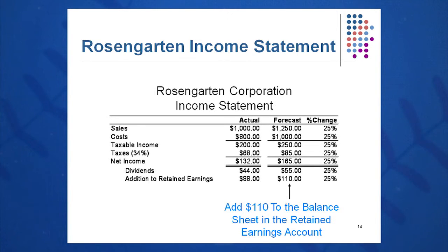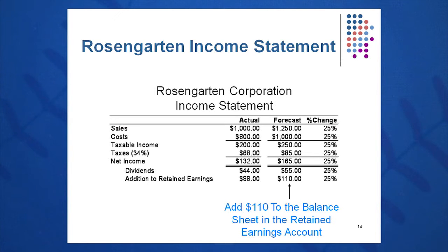I'll take one-third of $165 and get $55 for dividends, and keep two-thirds of $165, which is $110 addition to retained earnings. Dividends plus additions to retained earnings must total net income. Going horizontally, these numbers should show 25% growth. The one number I need from this income statement that I must circle and bring to the balance sheet is the additions to retained earnings — that $110. I lock in on it and bring it over.